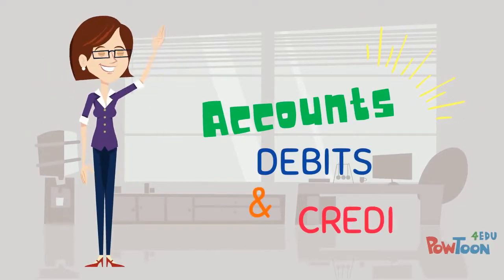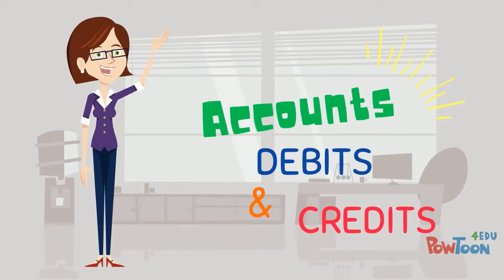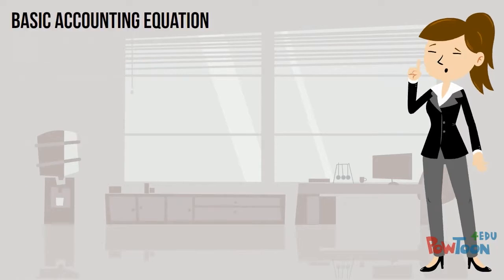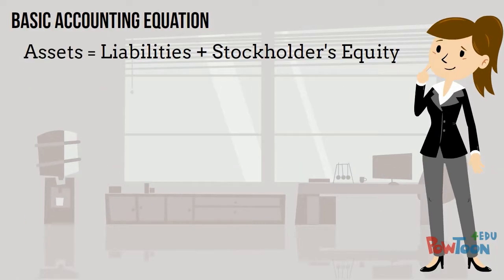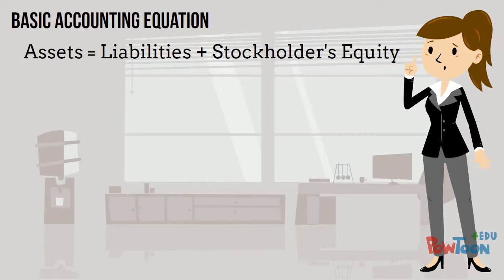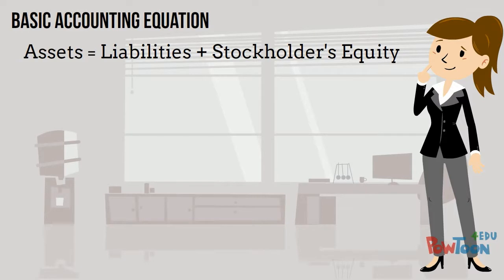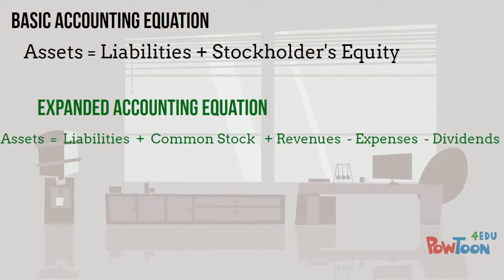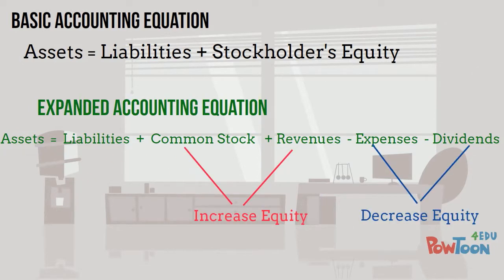Let's talk about debits and credits. First, let's review our basic accounting equation, which is assets equals liabilities plus stockholders' equity. We can expand our equation to show the components of stockholders' equity, where common stock and revenues increase equity, while expenses and dividends decrease equity.